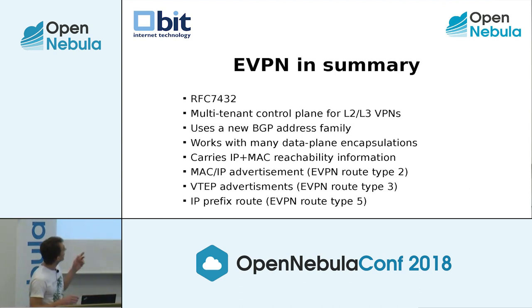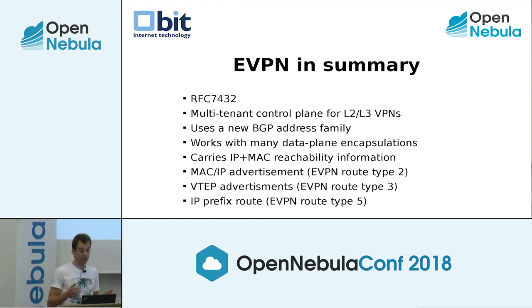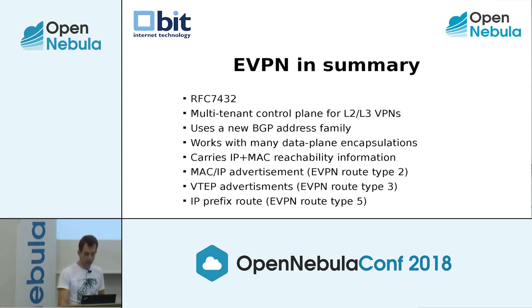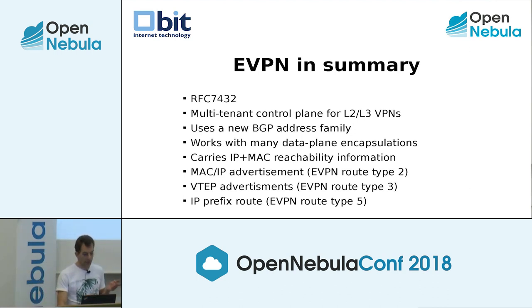EVPN in summary: it has its own RFC. It's a multi-tenant control plane for layer two and layer three VPNs. It uses a new BGP address family - alongside IPv4 and IPv6 routing, this is a new BGP family. It can work with many data plane encapsulations and carries IP and MAC reachability information, so it knows where a specific MAC or IP address lives in your network. There are 12 specified EVPN route types; only three are used most of the time - type 2 for MAC/IP, type 3 for VTEPs, and type 5 for routed.